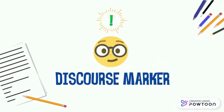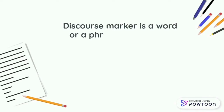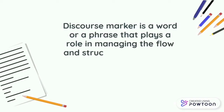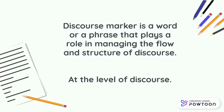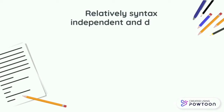Discourse Marker is a word or a phrase that plays a role in managing the flow and structure of discourse. Since their main function is at the level of discourse, rather than at the level of utterances or sentences, Discourse Markers are relatively syntax-independent and usually do not change the truth-conditional meaning of the sentence.